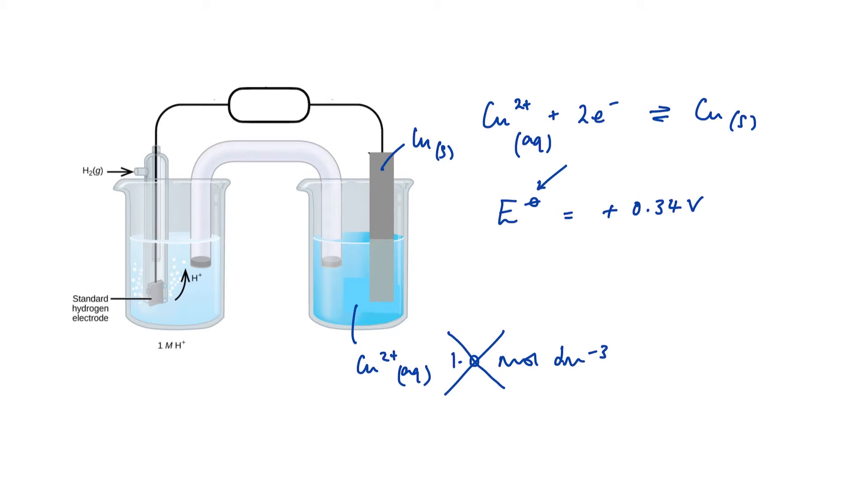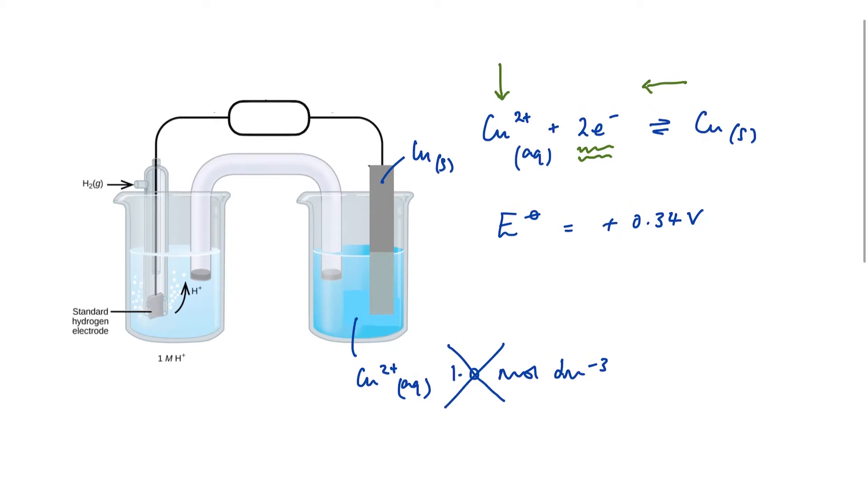Well, we can look directly at our half equation and we can use Le Chatelier's principle to make a judgment on that. So if I decrease the concentration of Cu2+ in this system, then the position of equilibrium will shift to the left. By shifting to the left, my system is producing more electrons. Electrons are negatively charged. So I would expect the electrode potential to be less positive. So a lower concentration of copper ions, a less positive electrode potential.